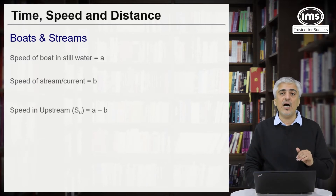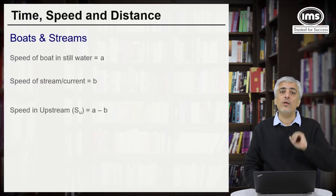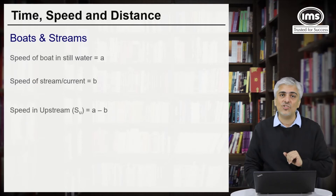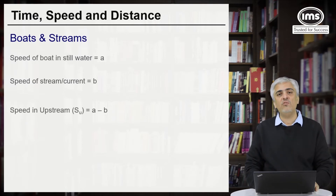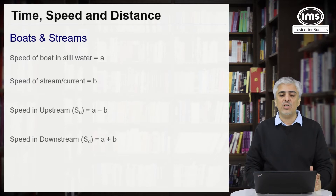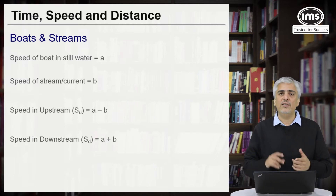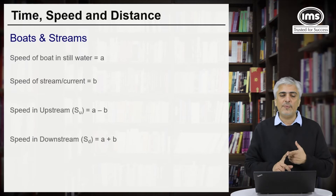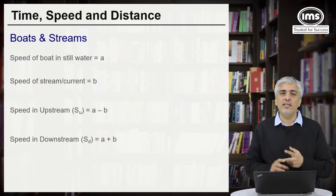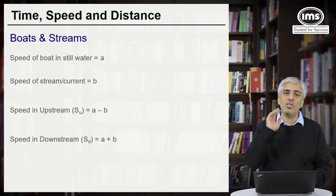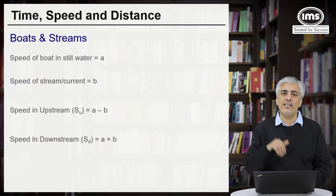The speed in upstream — when the boat is going against the stream — will be A minus B. Speed in downstream will become A plus B. So whenever the speed of the boat in still water is A and speed of the current is B, in upstream the speed will be A minus B, and in downstream the speed will be A plus B.